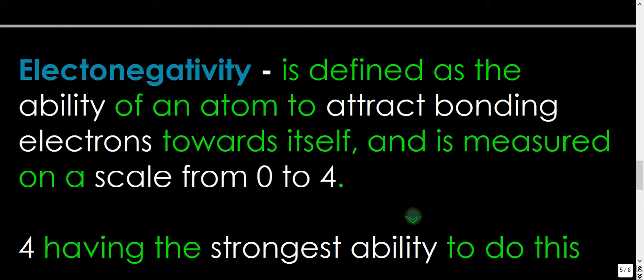And then electronegativity, which people get mixed up with electron affinity, but they are two different things. Electronegativity is the ability of an atom to attract bonding electrons toward itself. And it's on a scale from zero to four. You've seen that electron affinity is a measurement of how much energy is released when it gains an electron. Electronegativity is the ability for an atom to attract bonding electrons. And it's on a scale from zero to four, where fluorine is the most electronegative. And then there's oxygen and nitrogen. And of the nonmetals, hydrogen is the lowest, and fluorine is the highest.